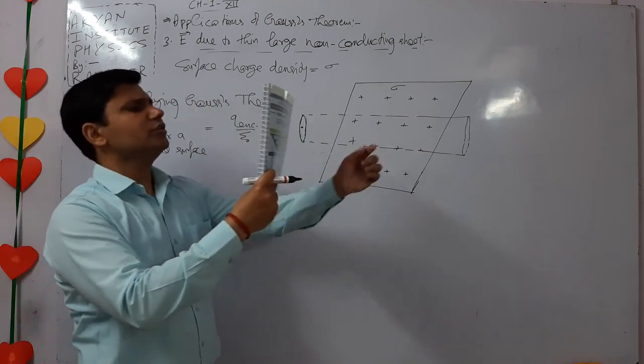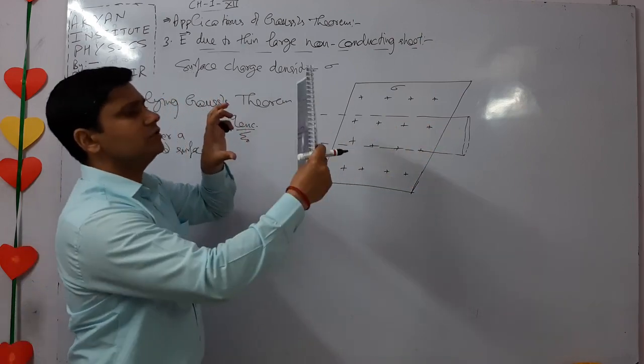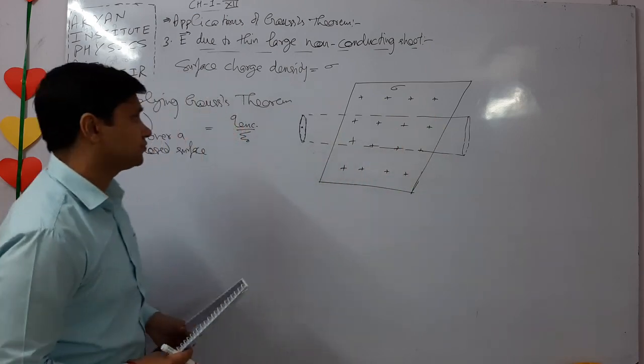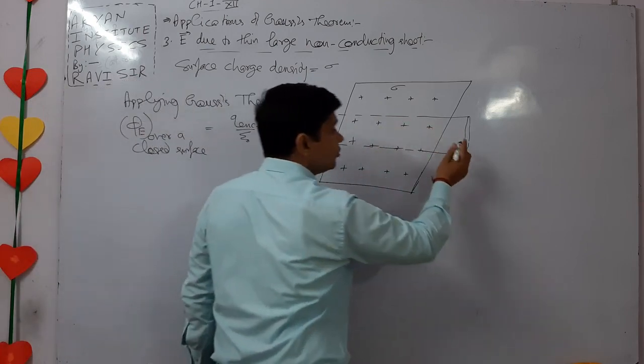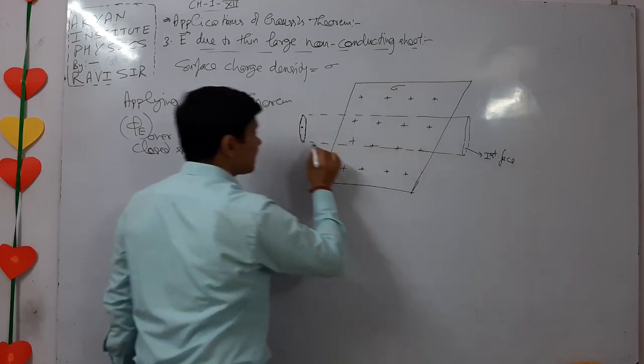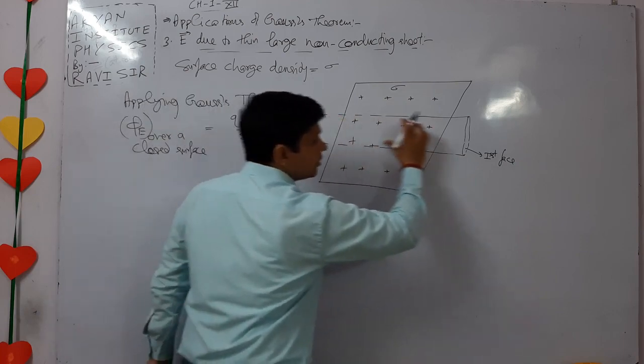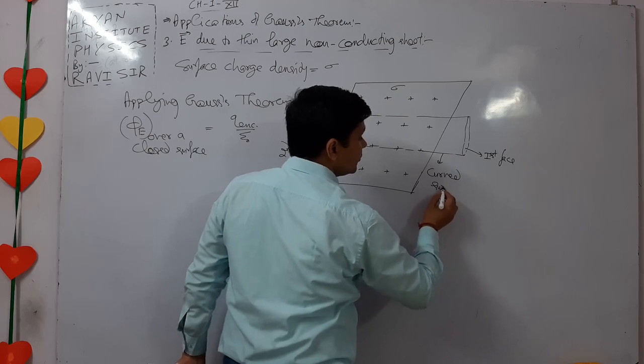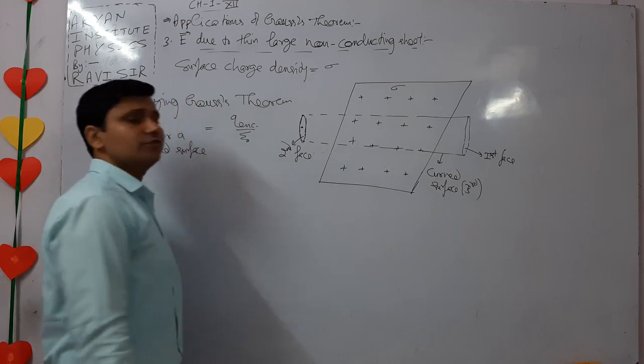The total will become a cylinder. This sheet has passed through it. The closed surface is a cylinder: first face, second face, curved surface is the third face.